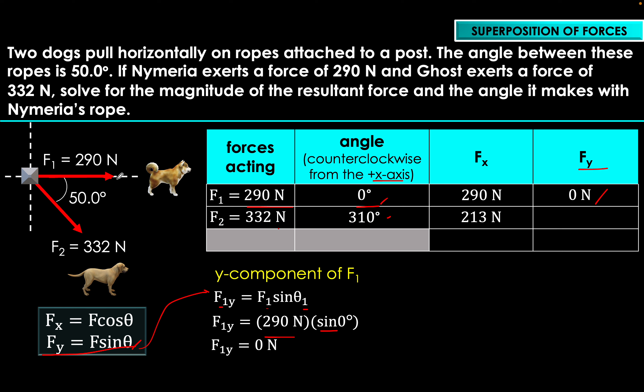In navigation, specifically aviation, superposition of forces matters when a plane encounters crosswinds that push it sideways off course. To counteract this, pilots adjust the nose slightly into the wind to compensate for the wind's force and keep the plane on its intended path. That's all — thank you for watching and have a great day!